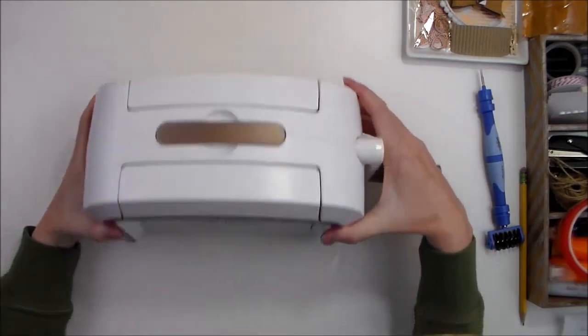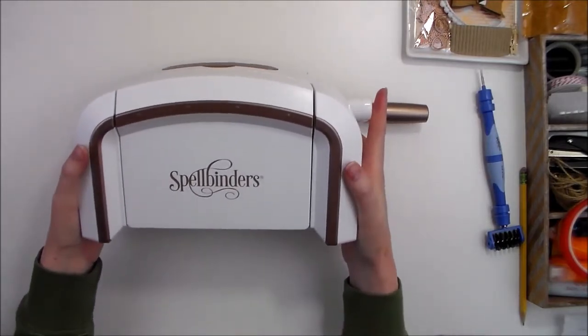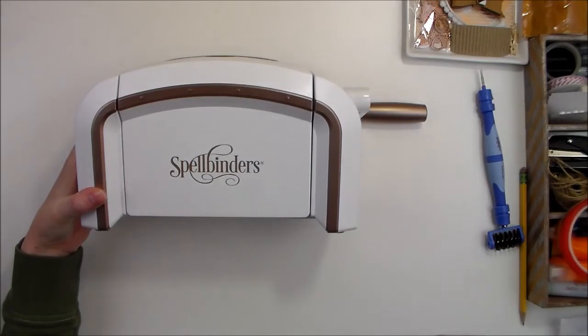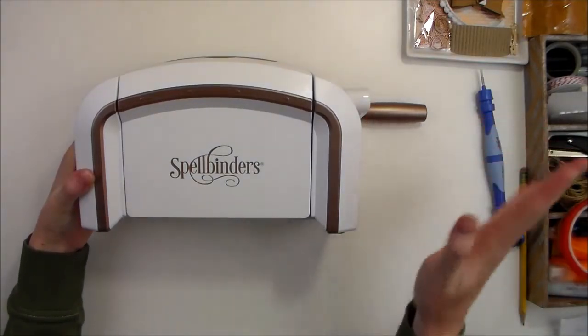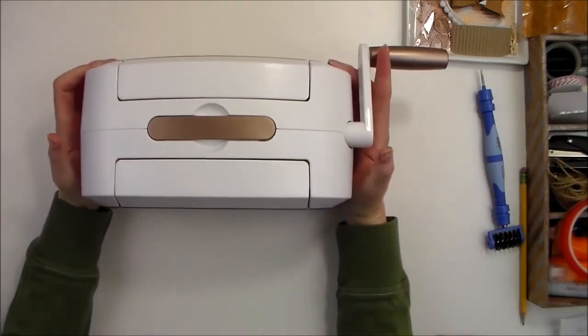It's really heavy. It's not one that you would want to pack with you to a crop or something. It's quite heavy. They do have a smaller machine, the Prism die cutting machine that would work well for crops. But today we're just going to talk about the Platinum machine.